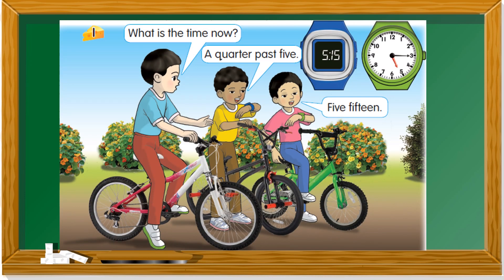Let's take a look at this situation. What is the time now? One friend said 'a quarter past 5,' another said '5:15.' If you see the digital clock, it shows 5:15. On the analog clock, the minute hand is at 3, which is a quarter past, and the hour has just passed 5 — so it's a quarter past 5. This is the digital watch and this is the analog watch.